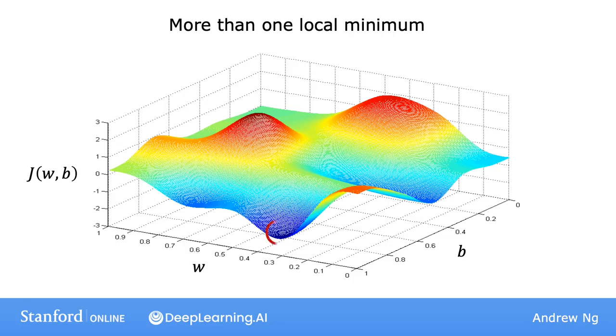This function has more than one local minimum. Remember, depending on where you initialize the parameters w and b, you can end up at different local minima. You can end up here, or you can end up here.